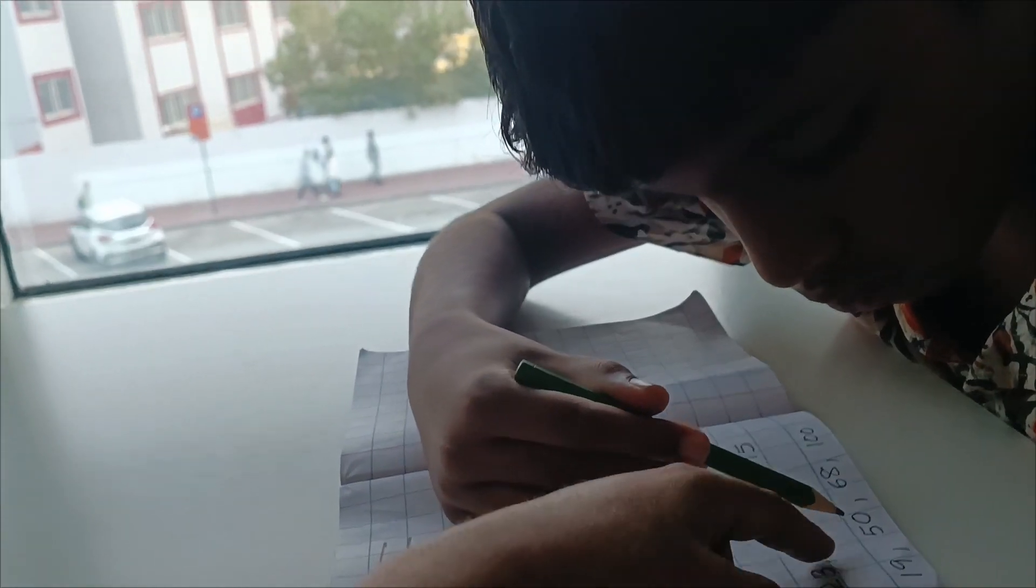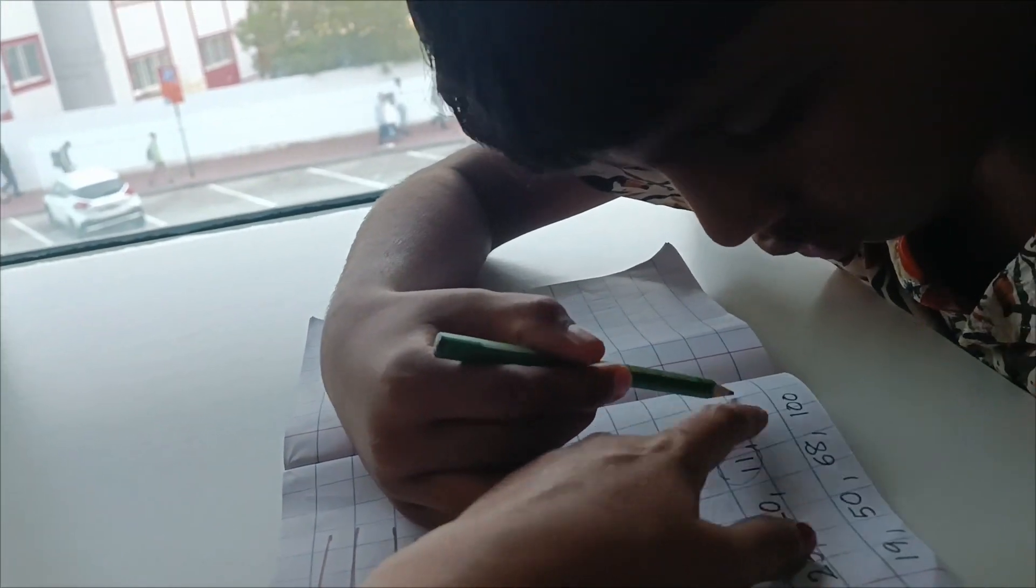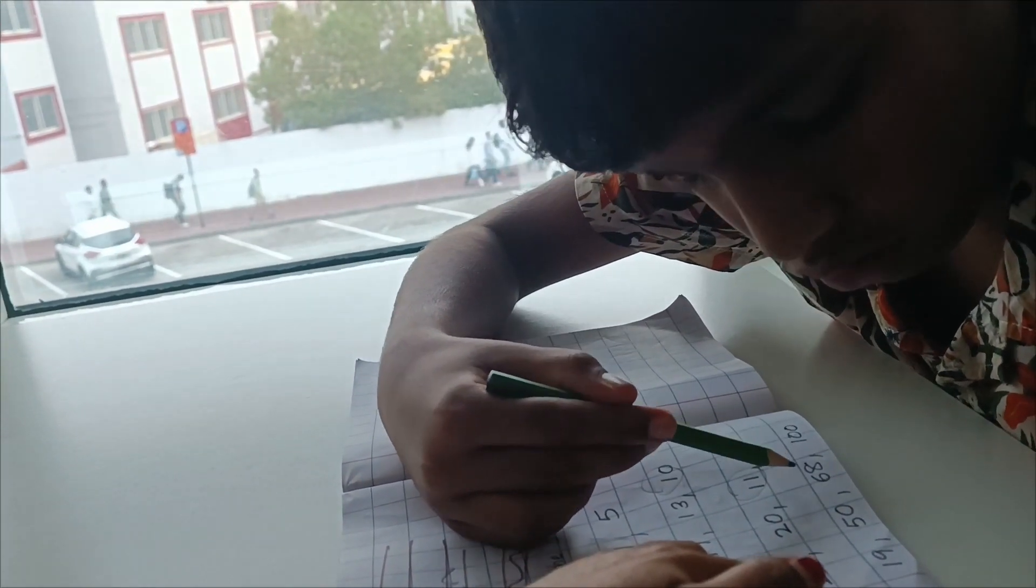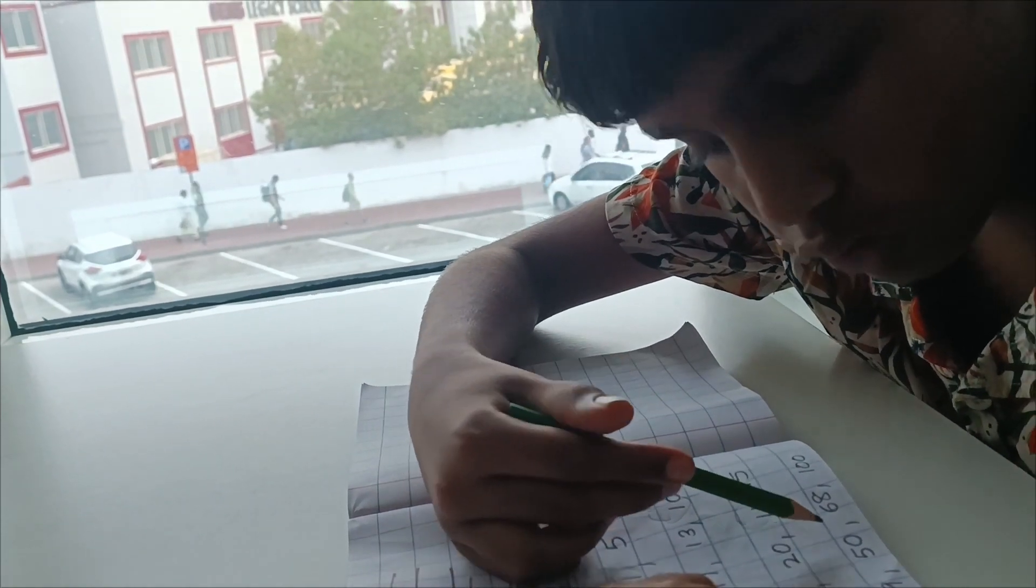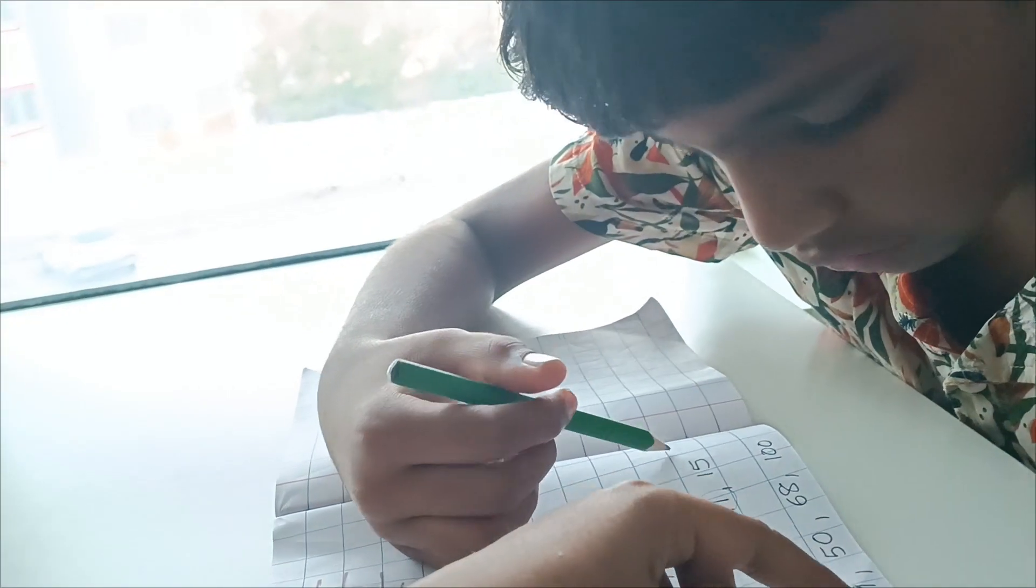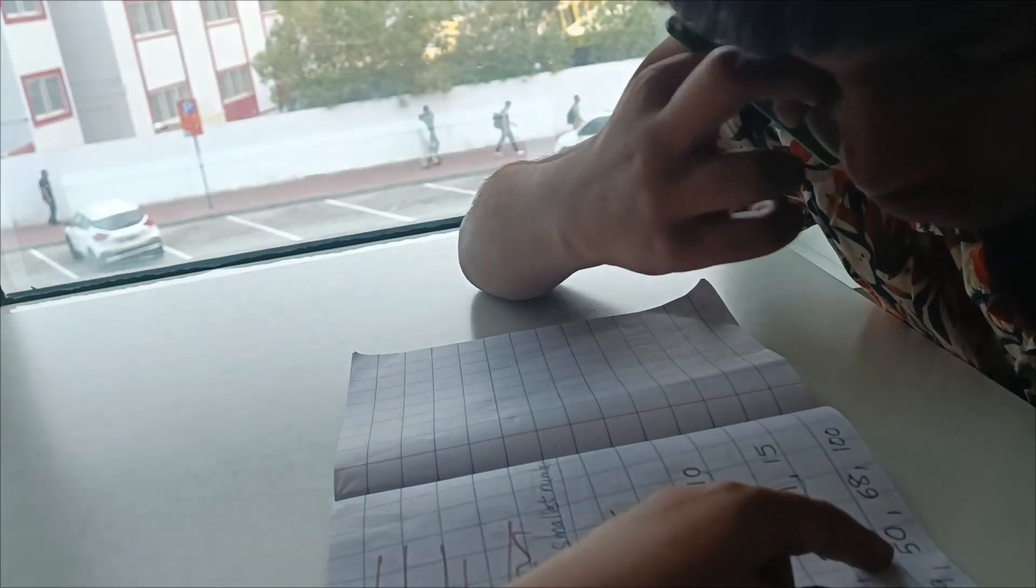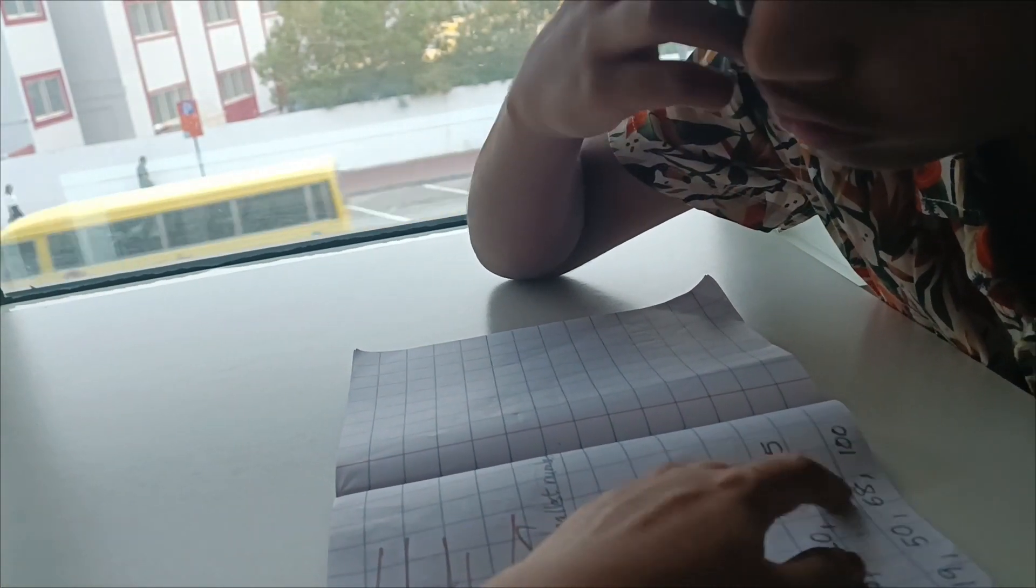Now last one. 19, 50, 68, 100. Smaller than it. Smallest. Bigger than small. 50. 50. All number number. 19, 50, 68, 100.